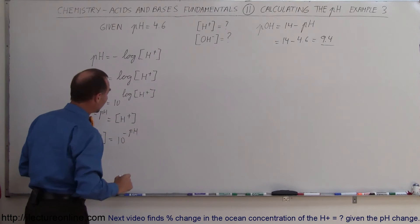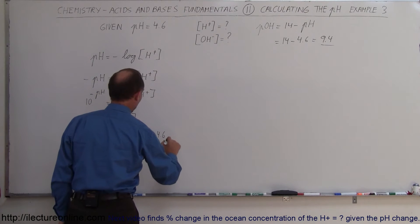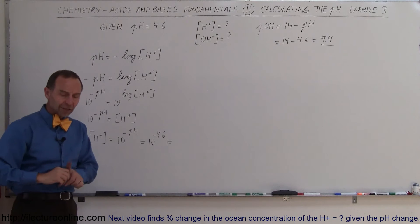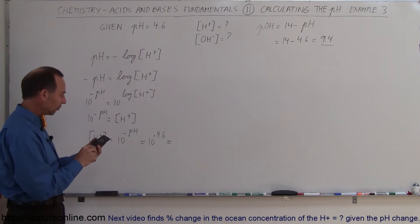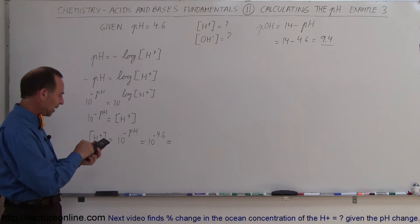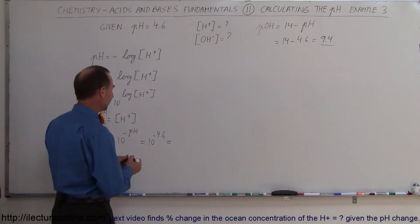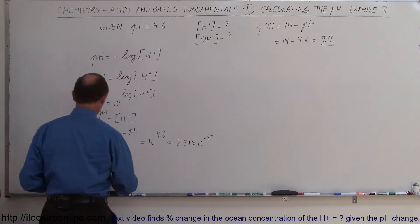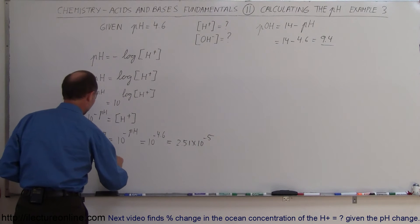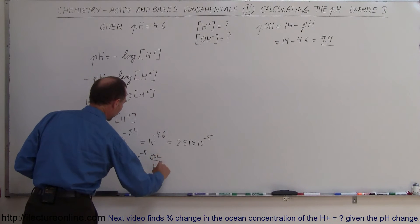Reversing the equation, [H⁺] = 10^(-pH). Since the pH is 4.6, this is 10^(-4.6). Converting to scientific notation, we get 2.51 × 10⁻⁵, so the concentration of the hydrogen ion is equal to 2.51 × 10⁻⁵ moles per liter.